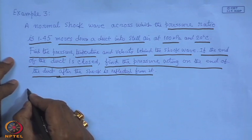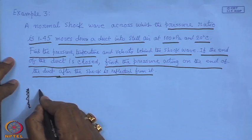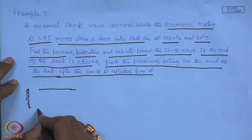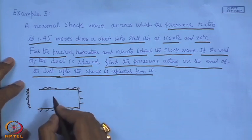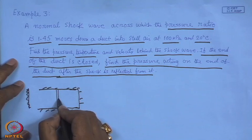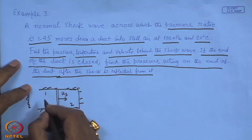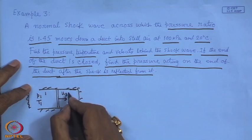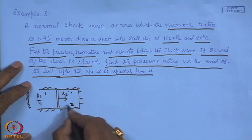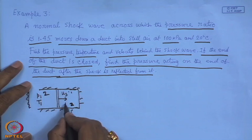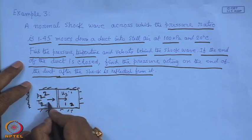Let us set up the physical model. This is the duct with the closed end. The incident shock moves with velocity U_s. Section 1 is ahead of the shock with pressure P1 and temperature T1. Section 2 is behind the shock with pressure P2, temperature T2, and an induced velocity V — as we did earlier.